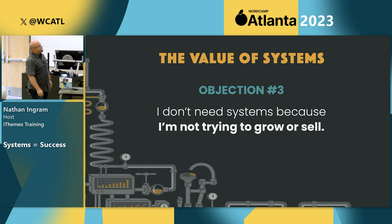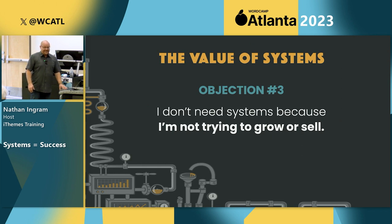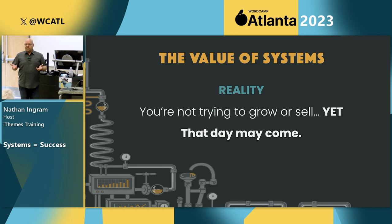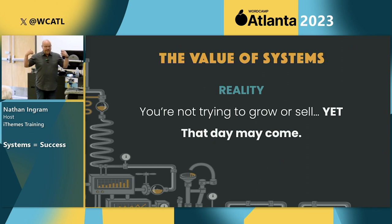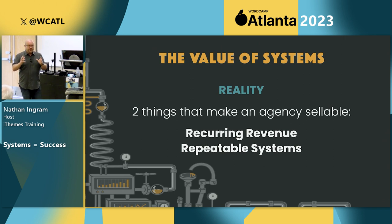A third objection: "I don't need systems because I'm not trying to grow or sell my business — I just want to do my business." You may not be trying to grow or sell yet, but that day may come. The two things that make an agency sellable are repeatable systems and recurring revenue. Those are the biggest factors in the value of your agency if and when you ever want to sell it.